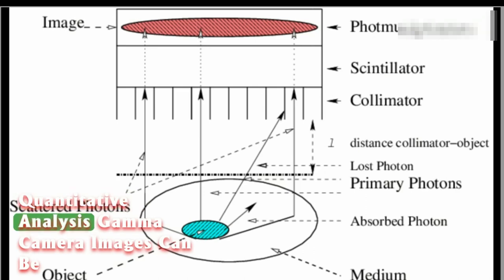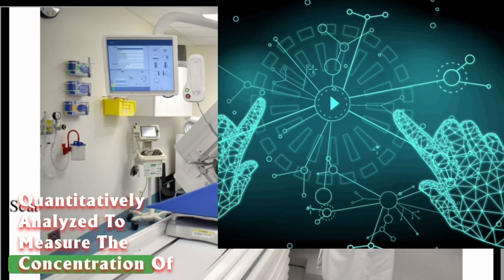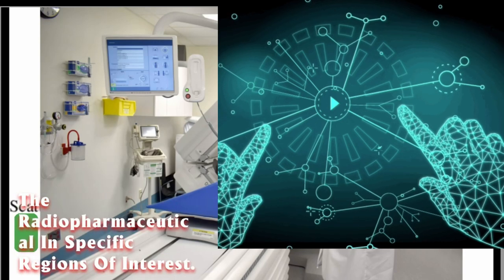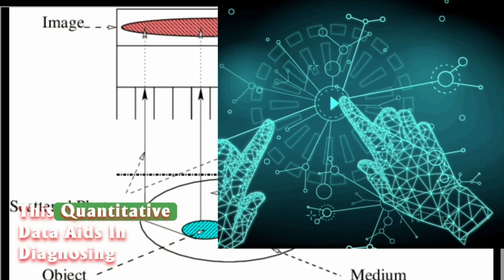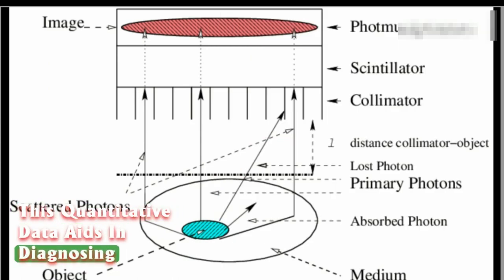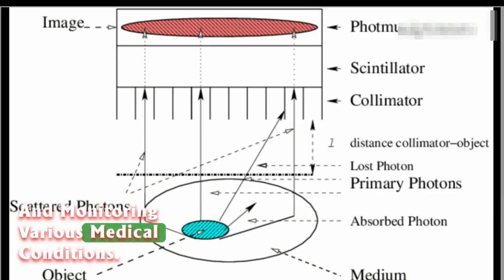Quantitative analysis: Gamma camera images can be quantitatively analyzed to measure the concentration of the radiopharmaceutical in specific regions of interest. This quantitative data aids in diagnosing and monitoring various medical conditions.